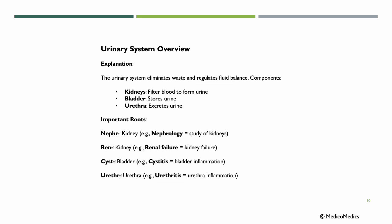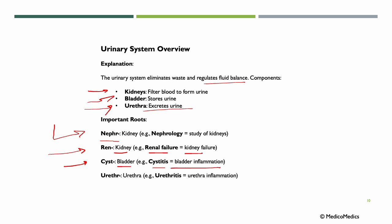Now let's move on to the urinary system. The urinary system eliminates waste and regulates fluid balance. Components include kidneys — our filtration spot — the bladder, storing our urine, and the urethra, whereby urine is excreted. Important roots: 'nephr' is kidney, so nephrology is the study of kidneys. 'Ren' also means kidney — renal failure means kidney failure. 'Cyst' means bladder — cystitis means inflammation of the bladder. Urethra is the same as urethra — if we have inflammation, we would say urethritis.